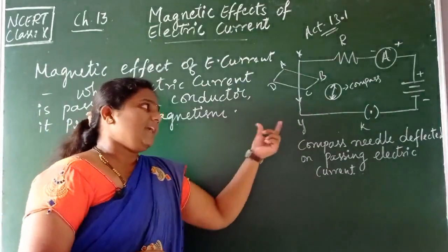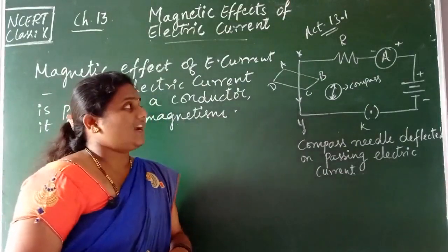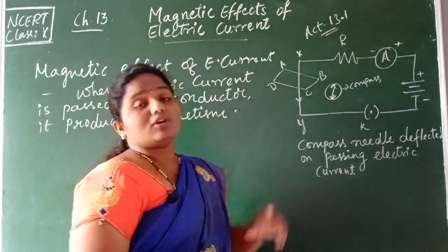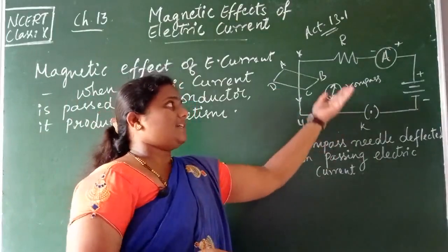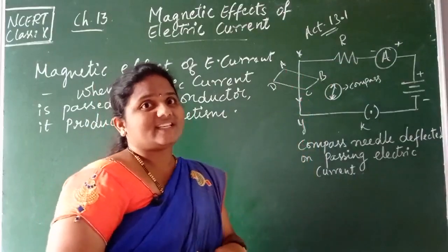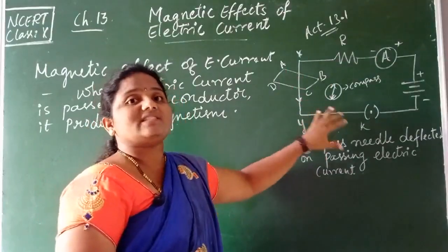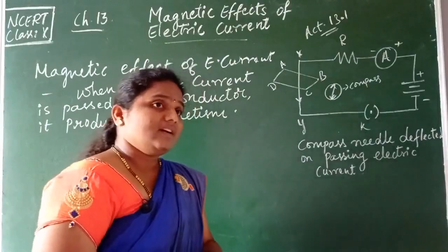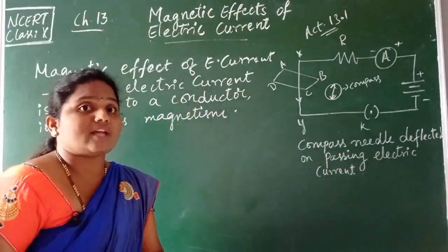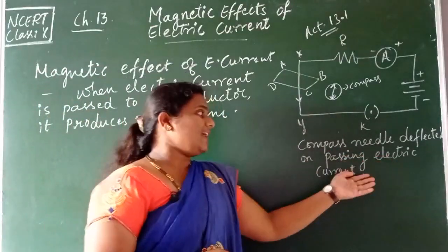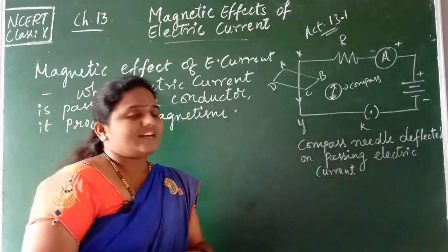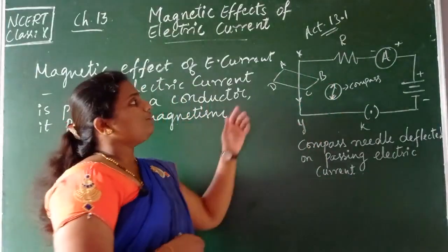This can be easily understood by a simple activity. For this activity, we need certain electrical components: a plug key, battery, ammeter, resistor, and a straight wire. After performing this activity, we are going to conclude that a compass needle deflects when an electric current is flowing in the circuit.